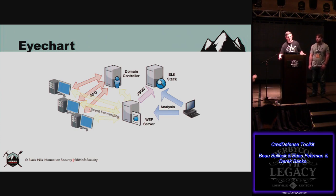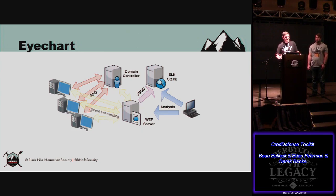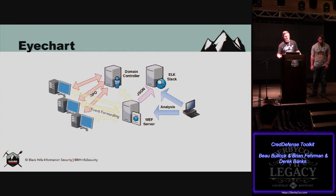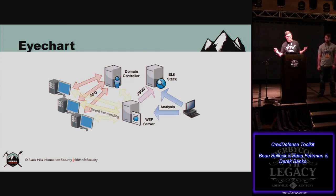I like the Windows Event Forwarder approach because it's not one more agent on your endpoints — in some places, deploying yet another agent is kind of a tough sell. Phil Hagen is a SANS instructor and course author for Forensics 572 who released a thing called SOF-ELK a couple years ago — basically a VM with an ELK stack pre-configured with lots of really awesome log stash filters. A new one is coming out very soon. If you don't want to go through the pain of setup, you could get SOF-ELK and probably just use that VM.